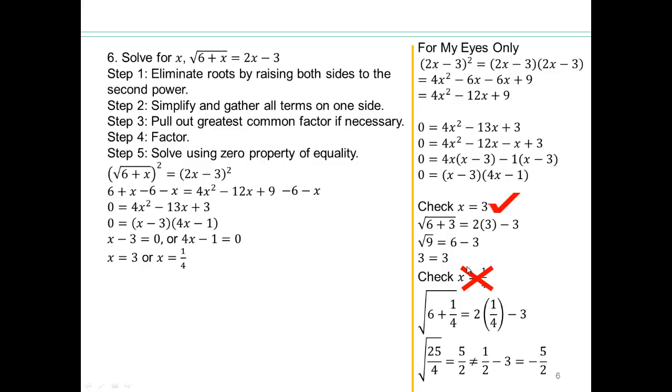This is called an extraneous solution. So just x equals 3 is our solution. And x equals 1 quarter is an extraneous solution.